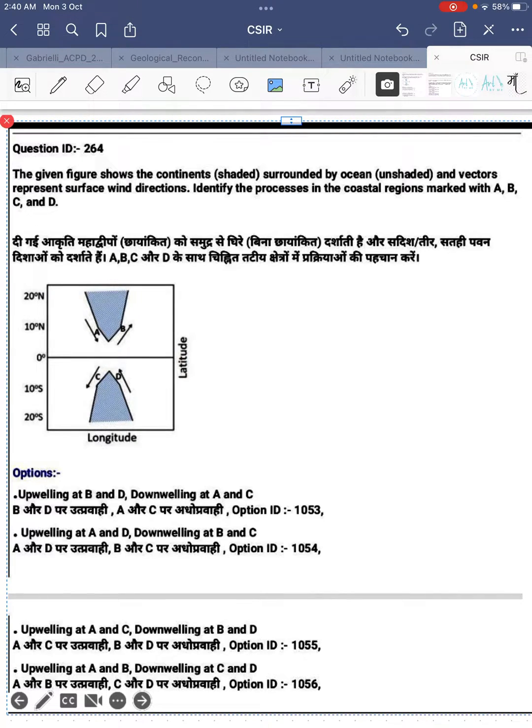Hello everyone, this is Yomrash back again with another video. Some students think this particular question is wrong, so let me explain. In the given figure, we have continents surrounded by the ocean and the vectors represent surface wind direction.